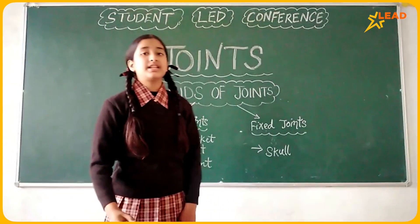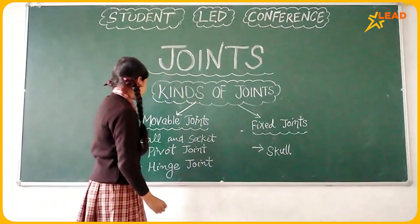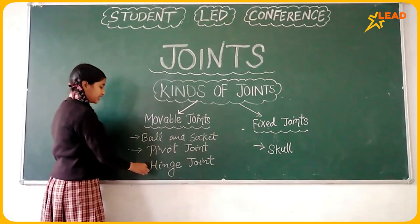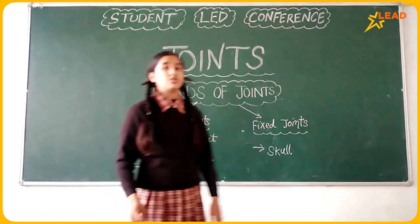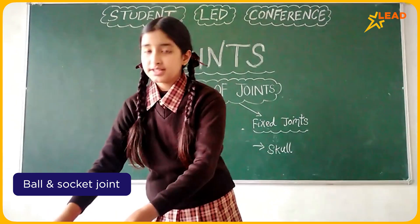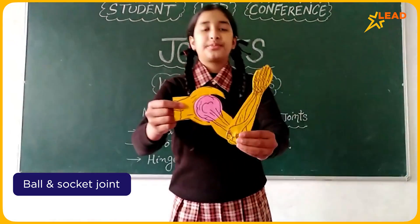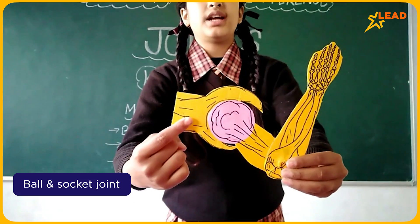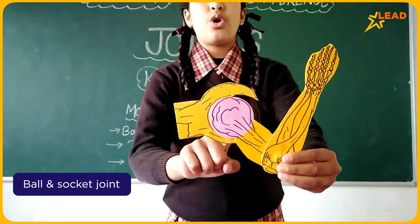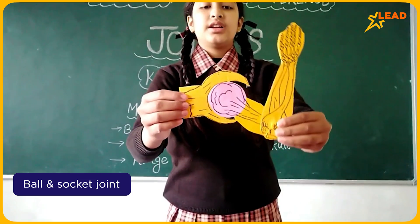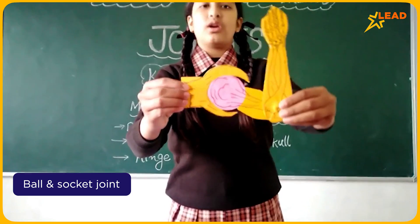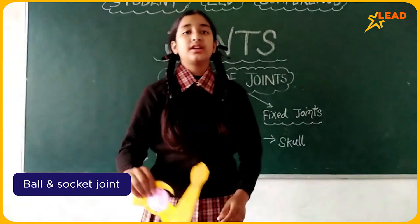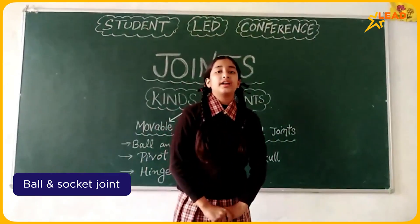There are three types of movable joints: ball and socket joint, pivot joint, and hinge joint. The ball and socket joint has two bones — the first bone ends with a ball and the second bone ends with a socket. The ball fits into the socket and it moves in all directions. It is present in our hips and our shoulder.